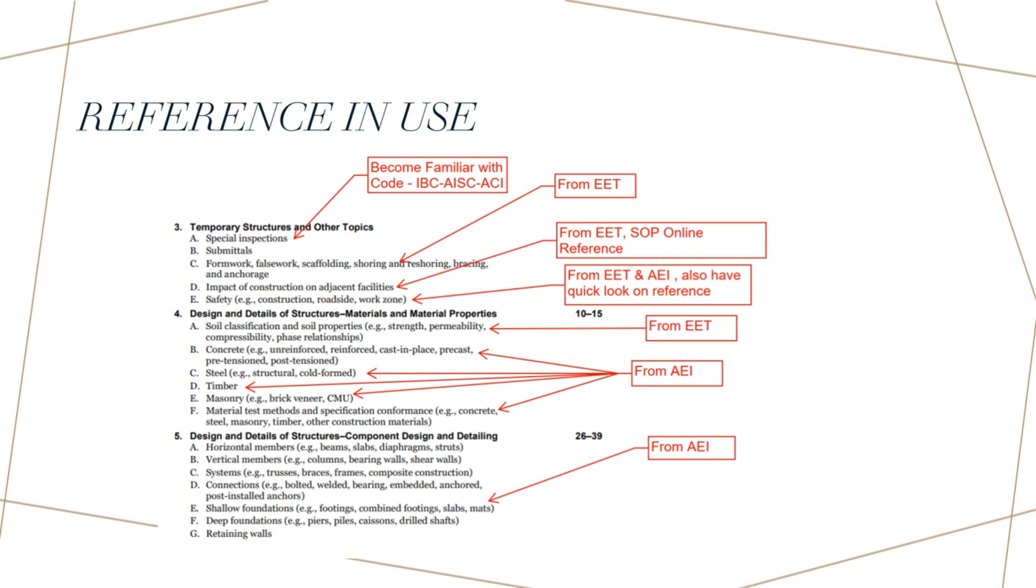For part 4, which is design and details of structures, materials and material properties, and part 5, design and detail of structure components, design and detailing, I mainly focused on the AEI to be prepared for the exam. Just for part 4A, which is soil classification and soil properties, I believe that EET is the better reference to look for and study that portion. It will be enough for the exam.